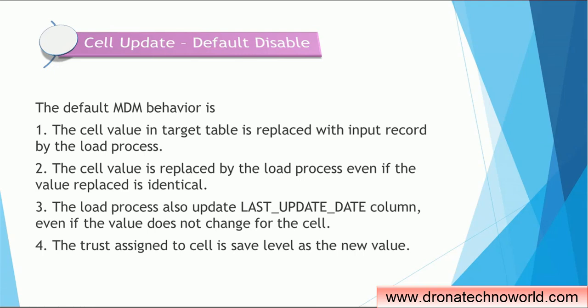Apart from the cell update, it also updates the last updated column in the target table, particularly in the XREP table. It does not check whether the value has changed for the cell or not. It just checks whether the last update date of that particular record is greater than the last update date in the existing XREP. If that is the case, it will update the record into the XREP as well as in the base object if the record survives. So that is kind of overhead on the MDM load job.